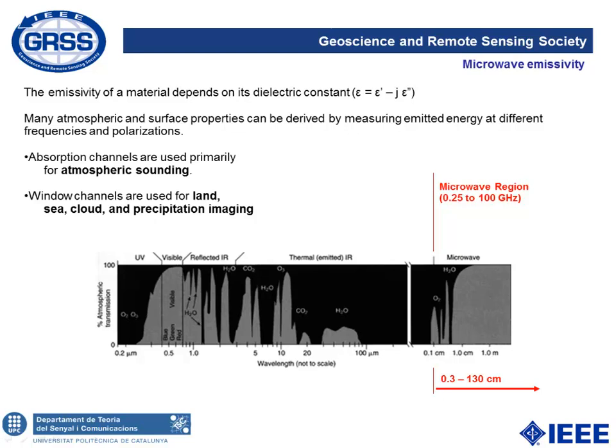Microwave emissivity: every material that is at a physical temperature above zero Kelvin emits energy in the electromagnetic spectrum. That energy depends on the dielectric constant of the material, and this dielectric constant contains information about its composition. Many atmospheric and surface properties can be derived by measuring this emitted energy at different frequencies and polarizations. The microwave region is located at the east part of the spectrum, covering from 0.25 to 100 GHz, corresponding to a wavelength of 0.3 to 130 centimeters.